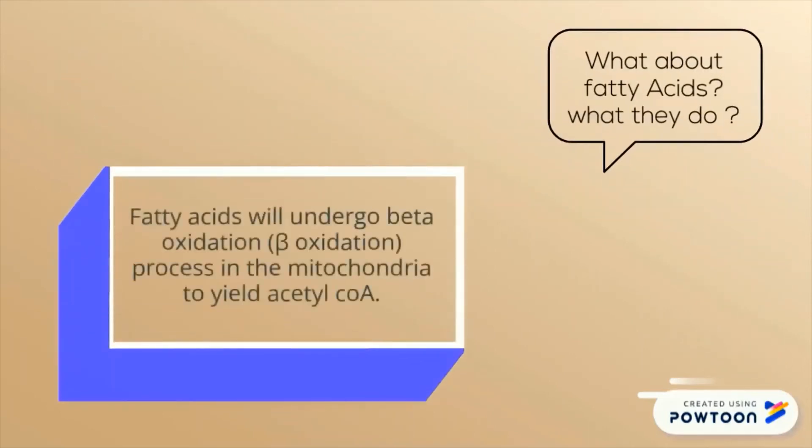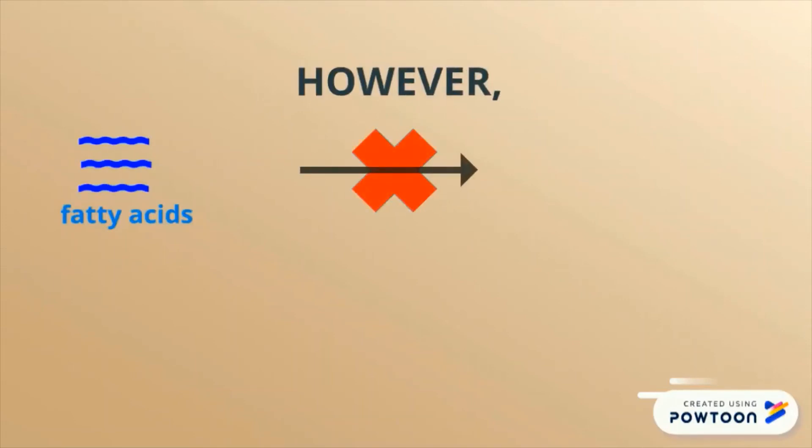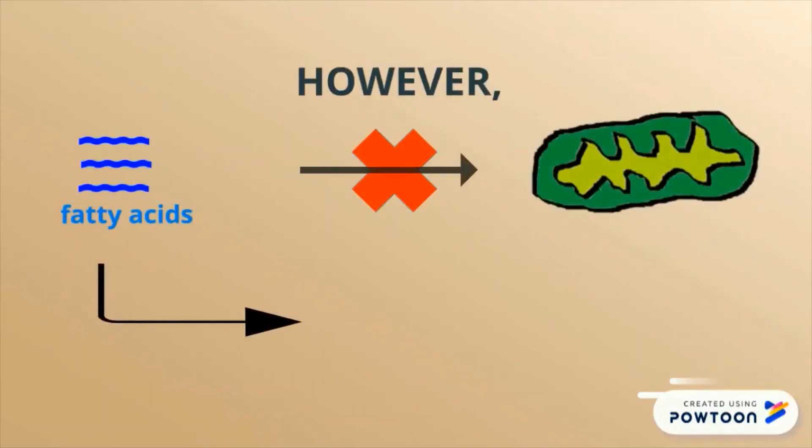Fatty acids will undergo beta-oxidation process in the mitochondria to yield acetyl-CoA. However, fatty acids cannot directly enter the mitochondria to yield acetyl-CoA. They need to pass through the transport system named carnitine shuttle after the fatty acids are activated.